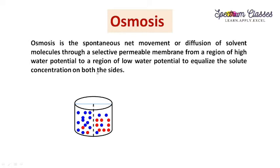Here I have written the definition of osmosis, and whatever is written will be explained with the help of this picture. Osmosis is the spontaneous net movement or diffusion of solvent molecules through a selectively permeable membrane from a region of high water potential to a region of low water potential, to equalize the solute concentration on both sides.